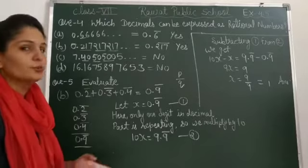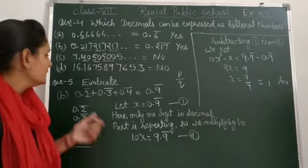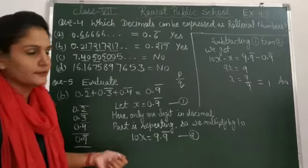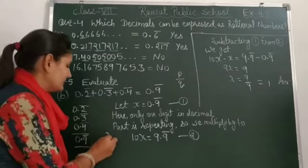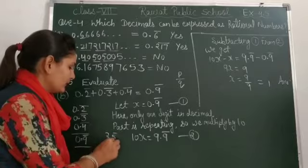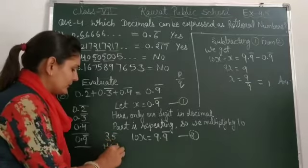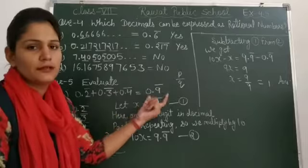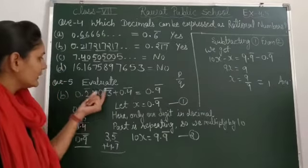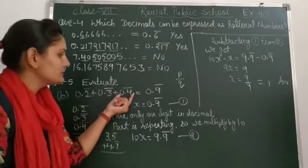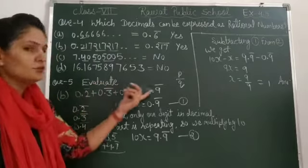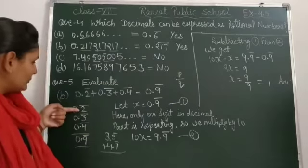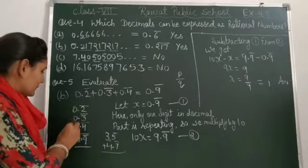Next question, question number 5. That is our last question. I have done B part. A part you have to do yourself. A part is 3.5 bar plus 4.7 bar. You have to add them same way. B part is 0.2 bar plus 0.3 bar plus 0.4 bar. You have to add all three.